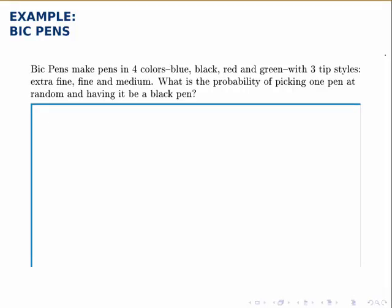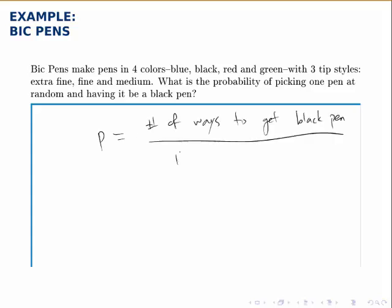Now we're going to illustrate doing probability using counting methods. A probability is the number of ways to get a black pen divided by the total number of possibilities. How many different pens are there if we're selecting a color and a tip style?